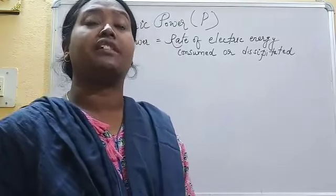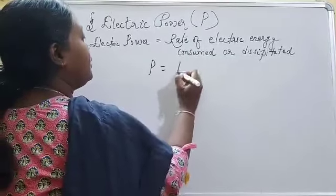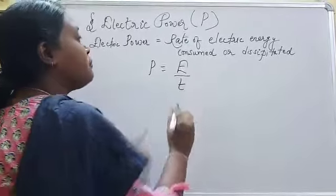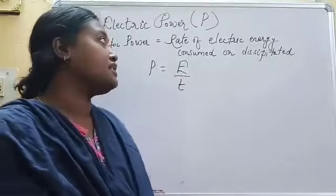Electric power is defined as the rate of electric energy consumed or dissipated by an electric device. Rate of electric energy consumed means power equals energy upon time. How much energy is consumed or dissipated by electrical device is the power.